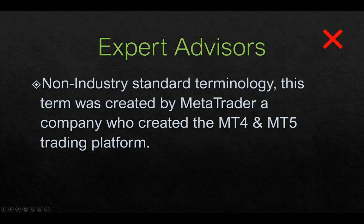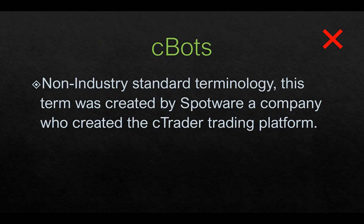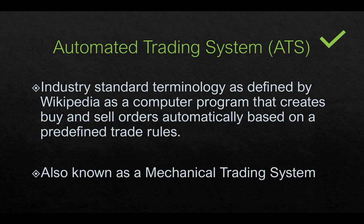The same applies to CTrader — they call their automated trading systems 'Cbots,' which is also non-industry standard terminology, used by them to identify their own individual products. The actual correct word is 'automated trading system' or ATS — the industry standard terminology defined by Wikipedia — which is a computer program that creates buy and sell orders automatically based on predefined trade rules. It doesn't have to create buy and sell orders; it can also identify trade setups or manage existing positions, such as trailing a stop loss using the average true range indicator. It's also known as a mechanical trading system.